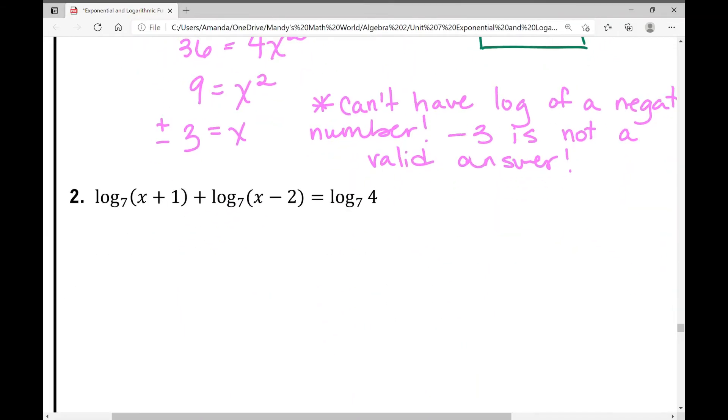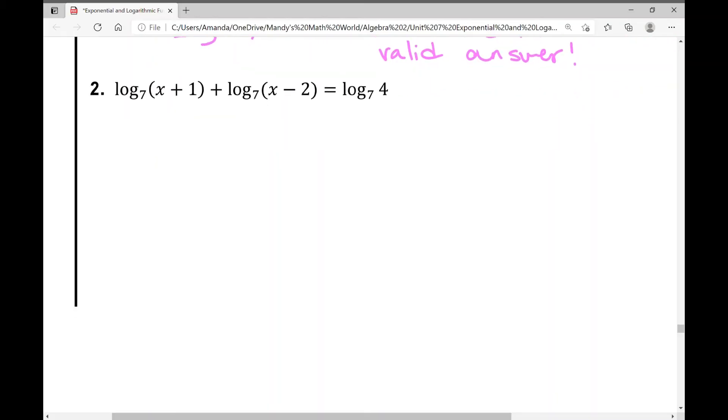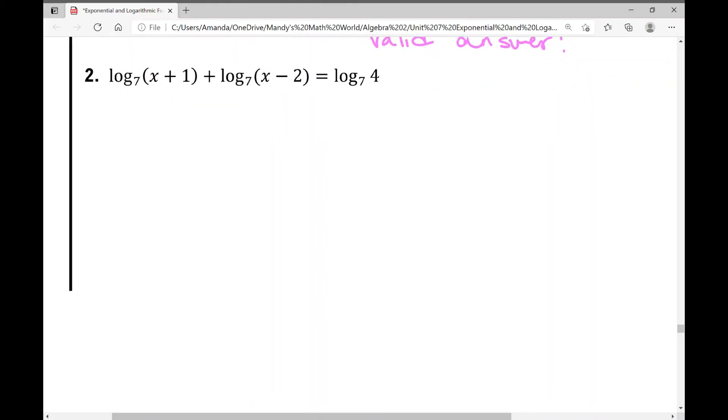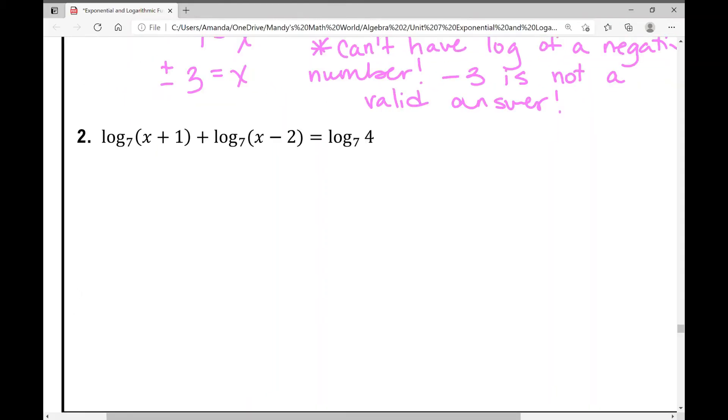We're going to condense each side to a single logarithm and this is a little more involved. This is about as difficult as it gets today. I have addition here that signifies multiplication. So I can condense this to log base 7 of x plus 1 times x minus 2 equals log base 7 of 4.